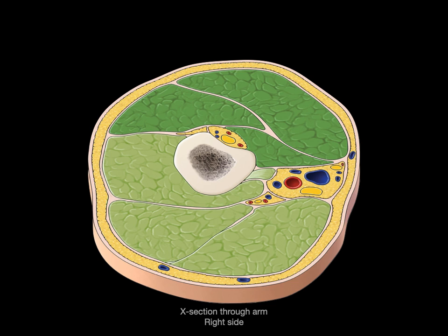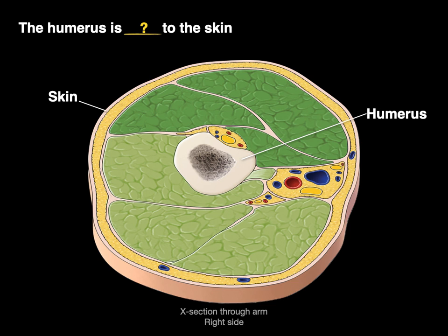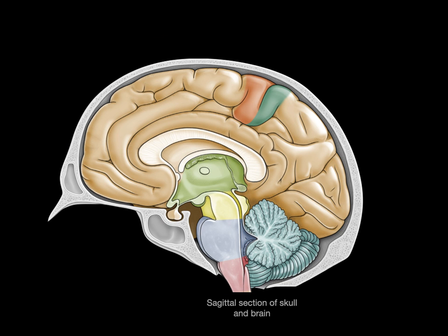Here's a cross section through the arm on the right side. There's the skin and there's the humerus, and the humerus is blank to the skin. Well, the humerus is in towards the inside of the arm, so we say the humerus is deep to the skin, or the humerus is internal to the skin, because it doesn't matter where we're looking — the humerus is always deep to it.